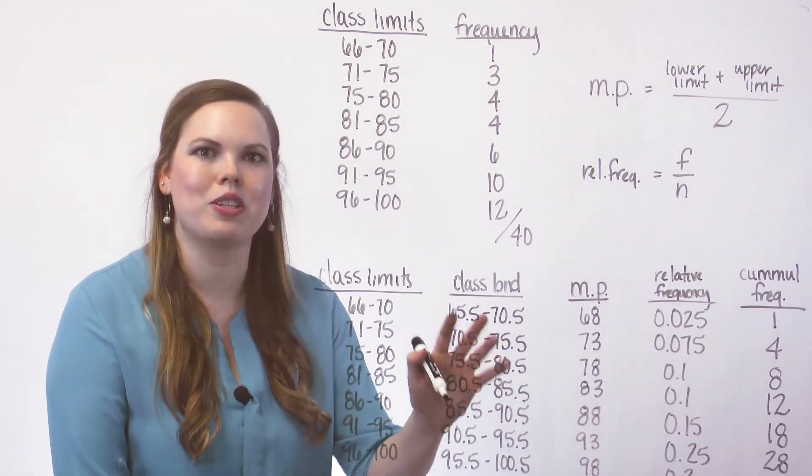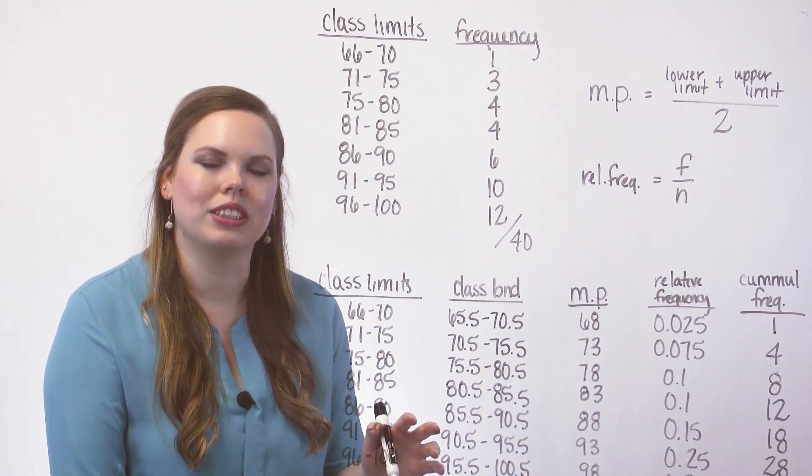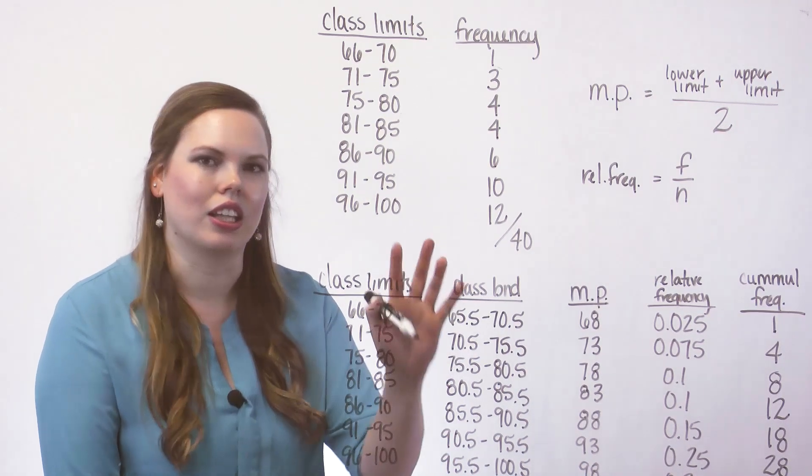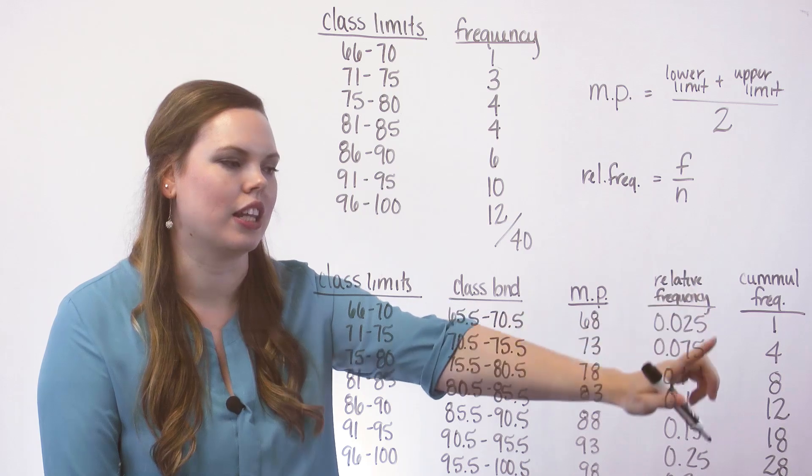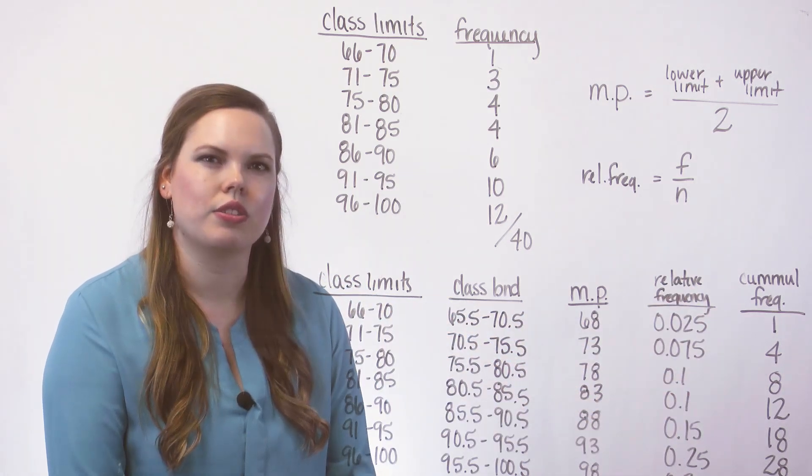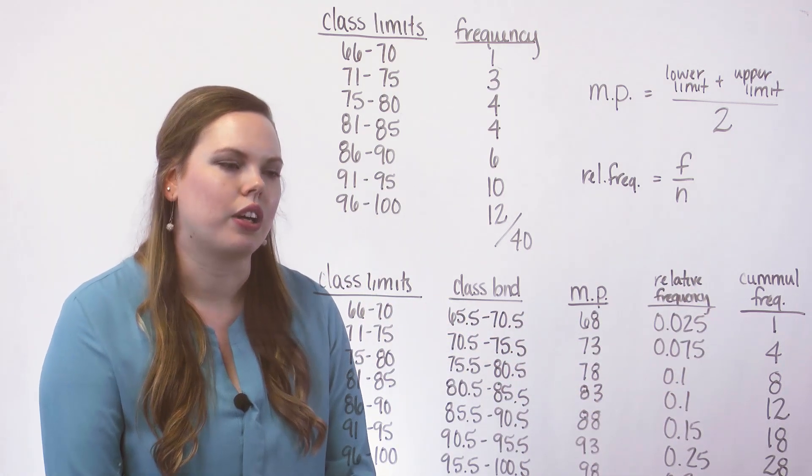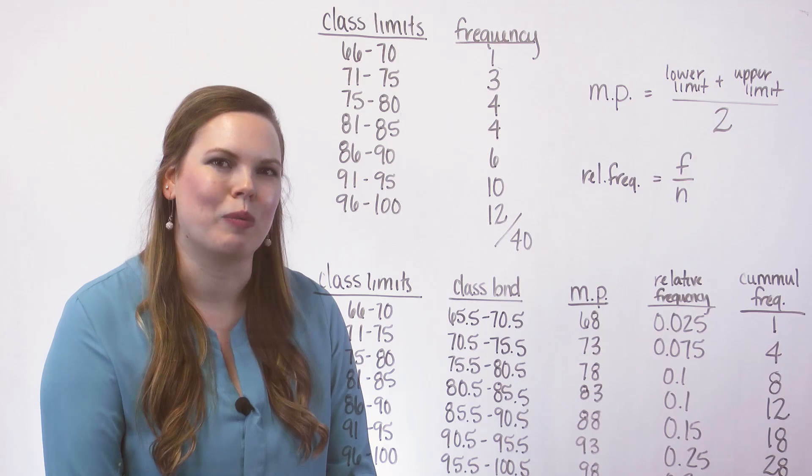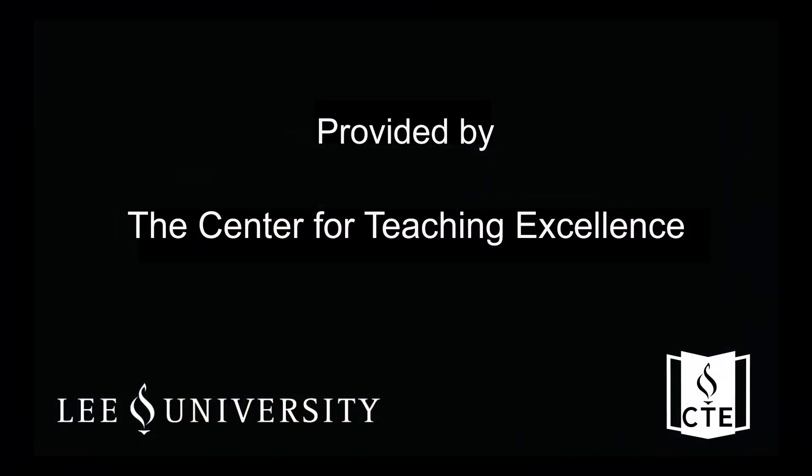So there's a much more detailed frequency distribution, including the class boundaries, the midpoint, the relative frequency, and the cumulative frequency. We're going to use this to construct graphs, or even to just analyze our data a little bit more. Thank you.